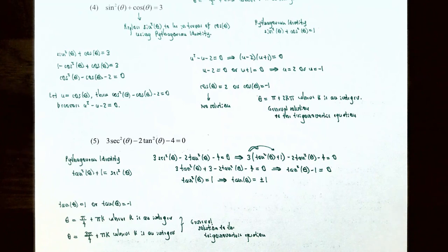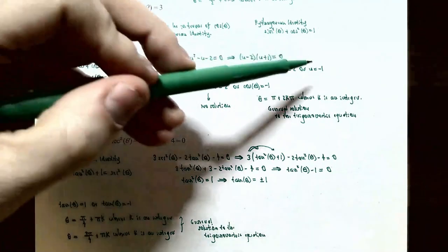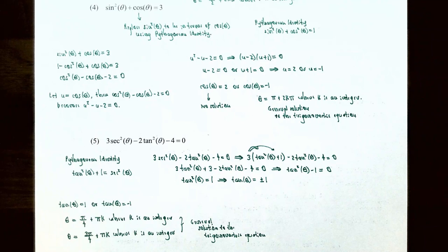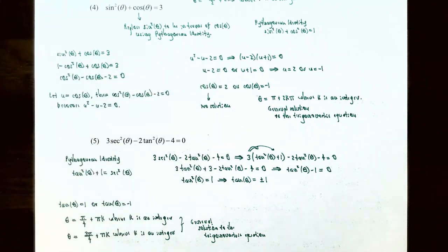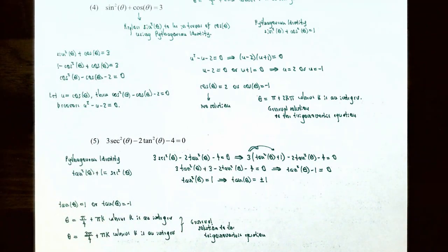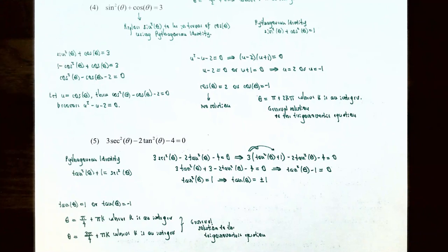Back-substituting: cosine of theta equals 2 or cosine of theta equals negative one. However, cosine of theta cannot equal 2 — that's impossible since cosine is always between negative 1 and positive 1 inclusive, so that equation has no solution. When cosine theta equals negative one, theta equals pi. So the general solution is theta equals pi plus 2pi·k, where k is an integer.